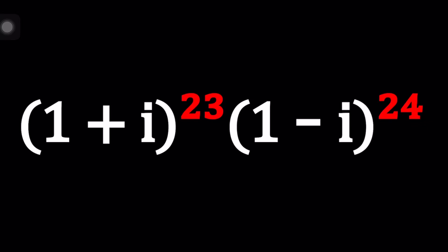Hello everyone. In this video, we're going to be multiplying two powers of complex numbers. We have (1 + i) to the 23rd power, and that is multiplied by (1 - i) to the power 24. Let's see how we can handle this problem. I'll be presenting three methods, and let's start with the first one.